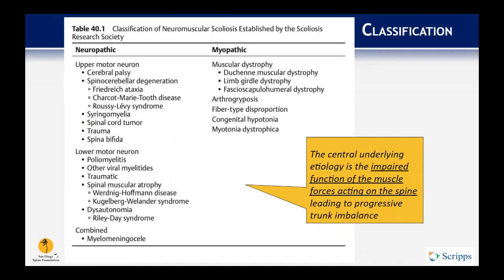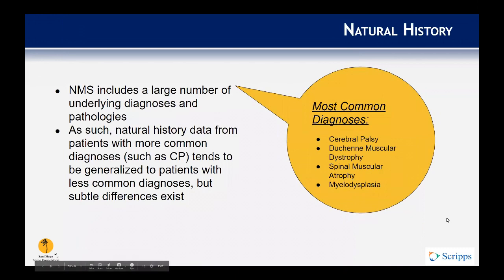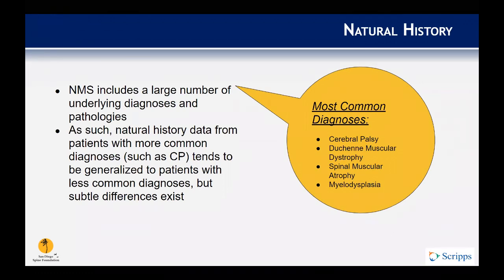The central underlying etiology is basically impaired function of the muscle forces acting on the spine, which leads to progressive imbalance. There are a large number of different underlying etiologies and diagnoses, making the disease process difficult to understand. People have looked toward more common etiologies such as cerebral palsy to generalize. The most common conditions are cerebral palsy, Duchenne muscular dystrophy, spinal muscular atrophy, and myelodysplasia.